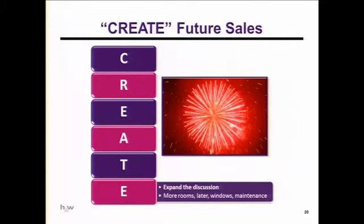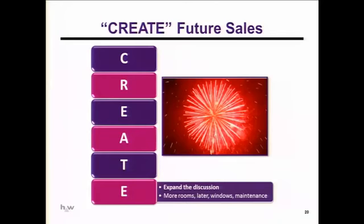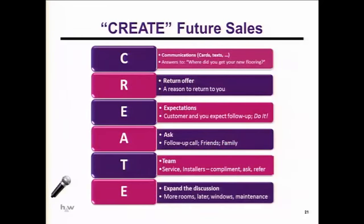And the final E is Expand the discussion. Expand is about more rooms — but it's not only about how much of the floor surface you're doing. It's also the blinds, the cabinets, the maintenance service — whatever else you have to offer. Expand the discussion. If they bought new wood for the family room, what about rugs? On and on. So the E in this model is for expanded discussion. And here's that whole CREATE model in one fell swoop.